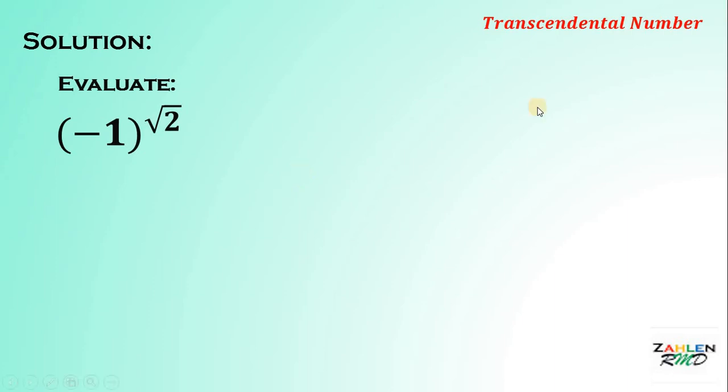To evaluate this expression, we will use this identity: E raised to I pi equals negative 1. Therefore, we can replace negative 1 by E raised to I pi. If we do that, we will get E raised to I pi, raised to square root of 2.